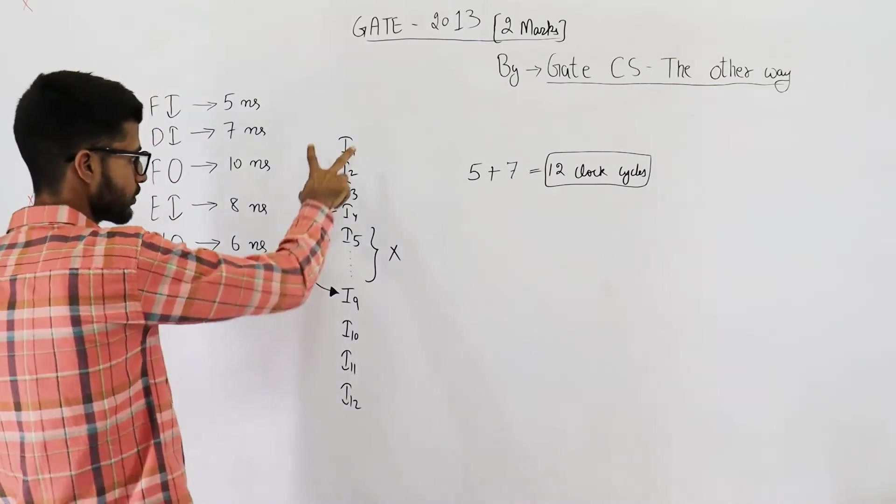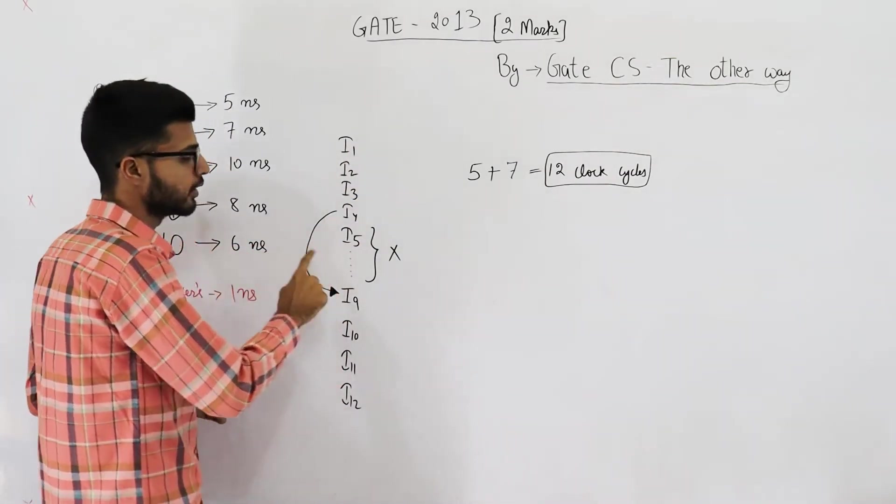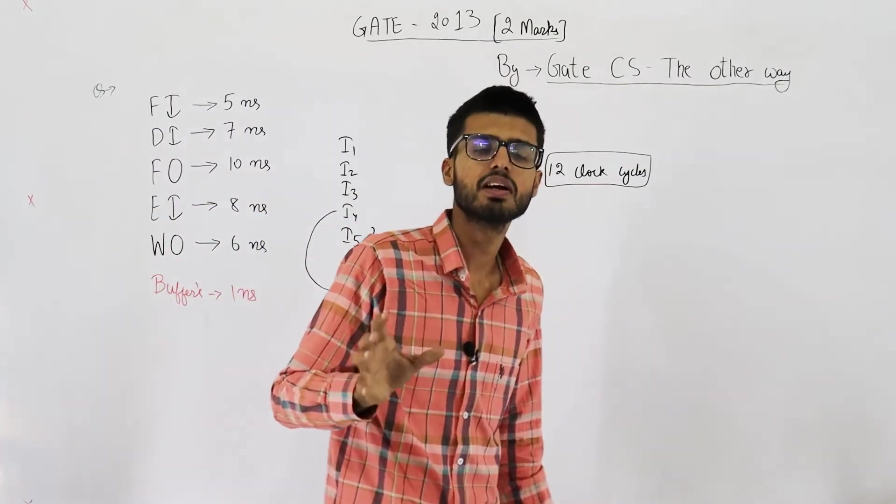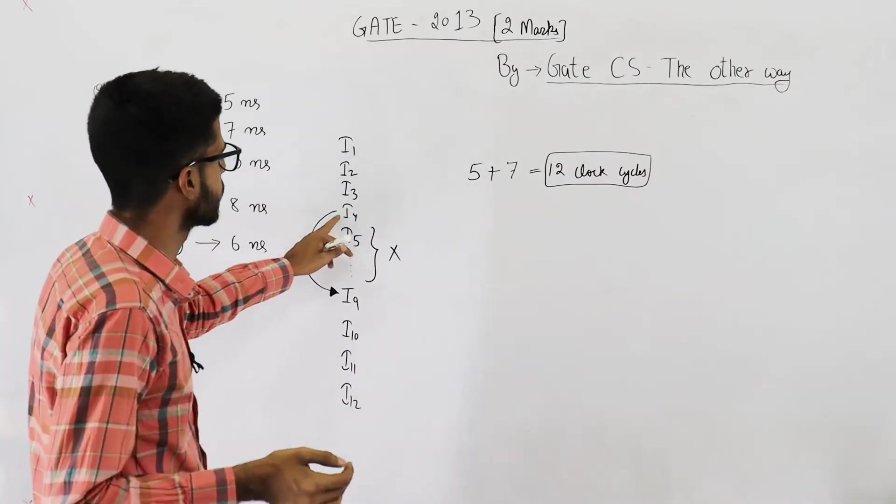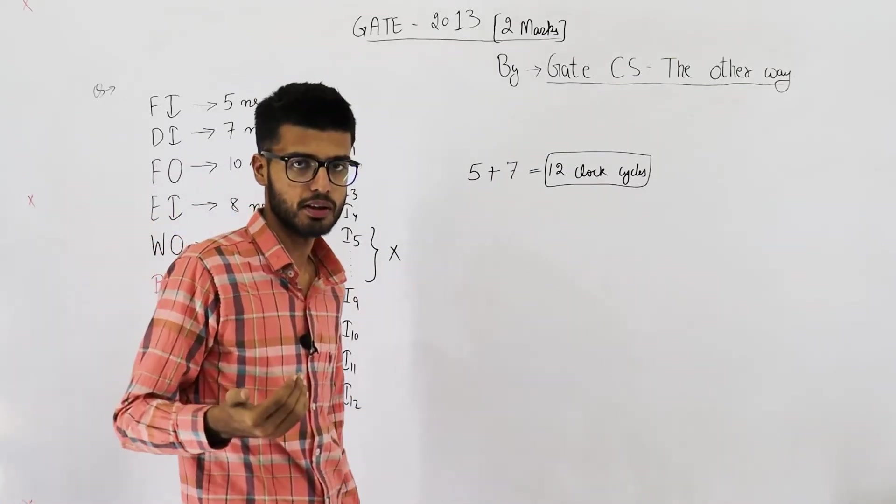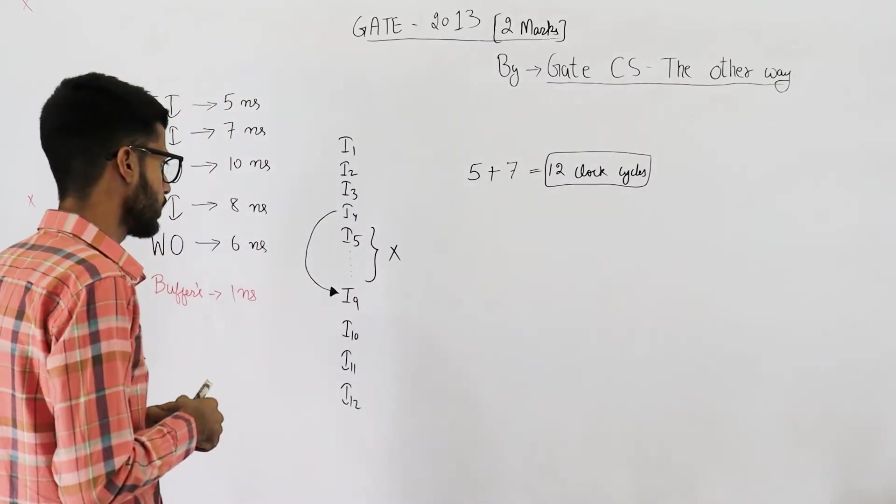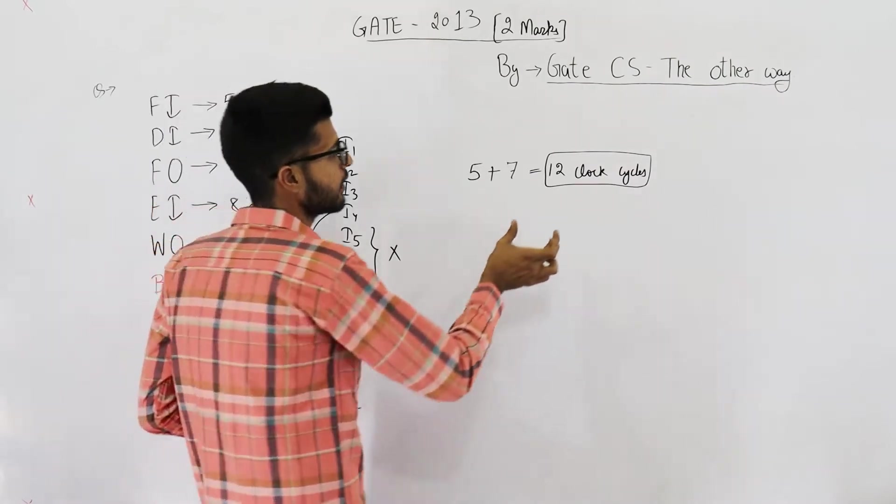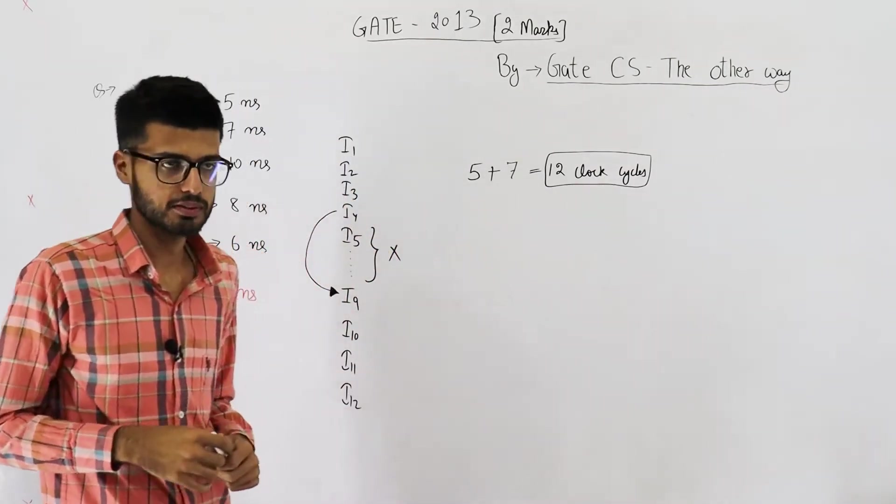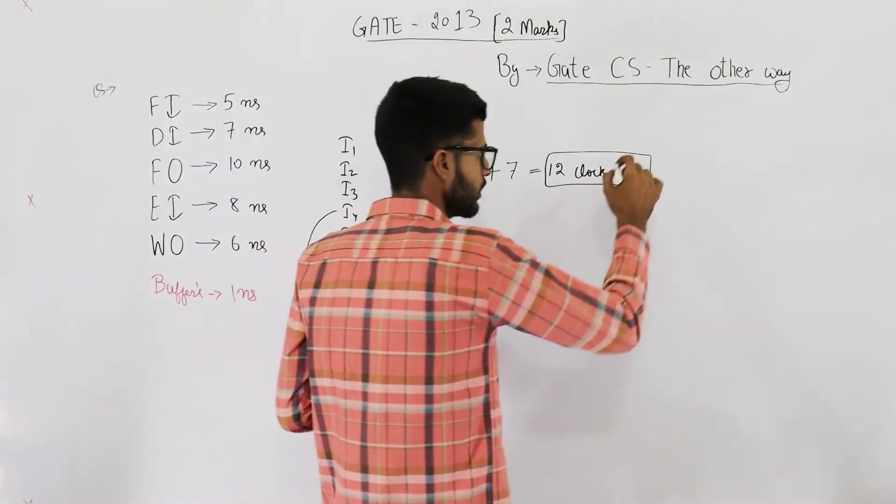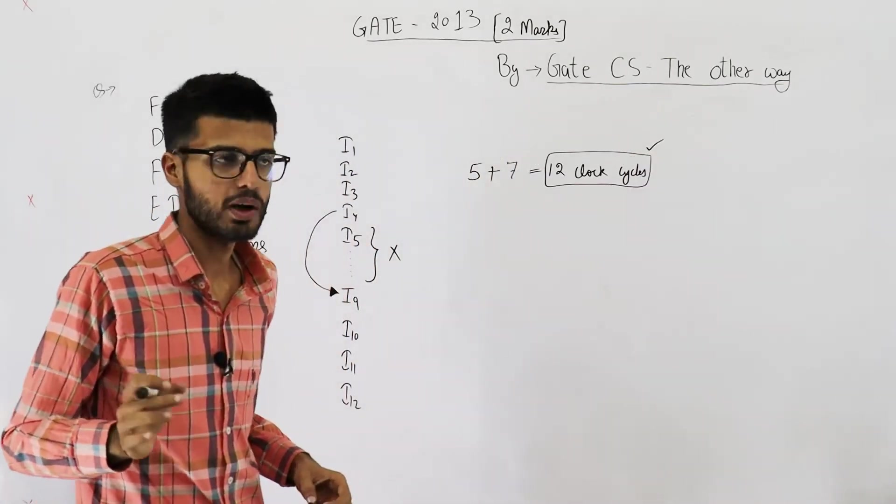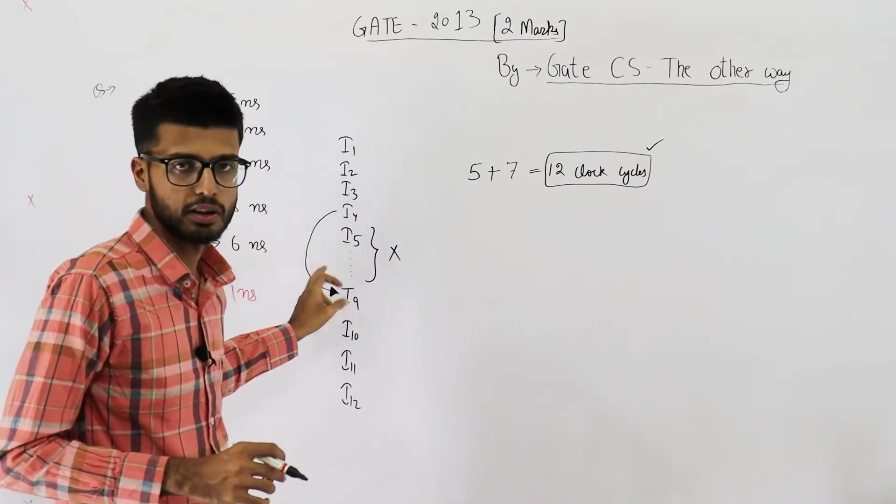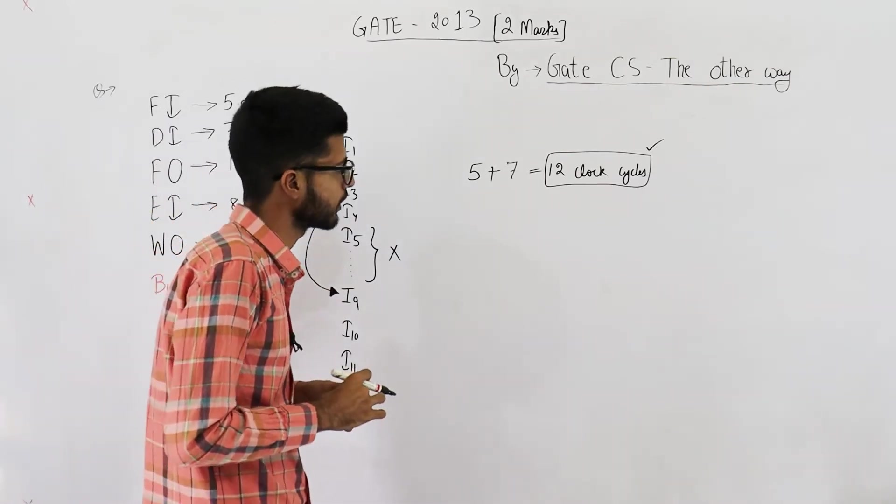But the thing is this one is not a normal program. It has a branch. So there will be some empty cycles where we are not doing any work. So in those cycles, the CPU will be stalling. Now let's find out how many stall cycles will be there. And we'll add that number into 12 to get the effective number of clock cycles required by such program.